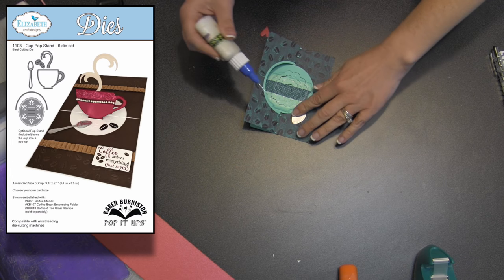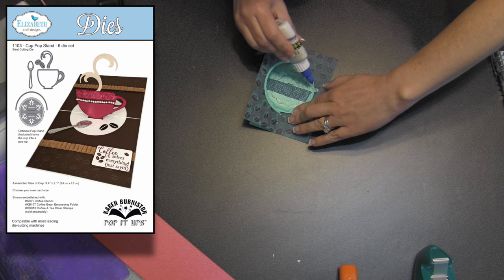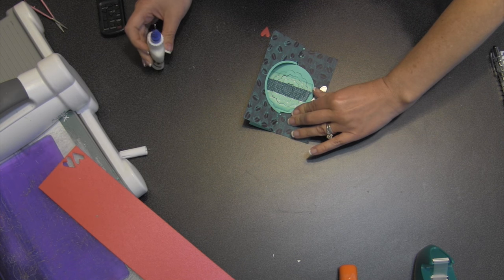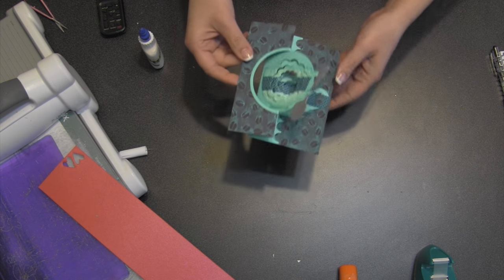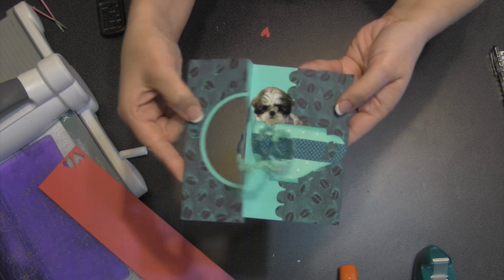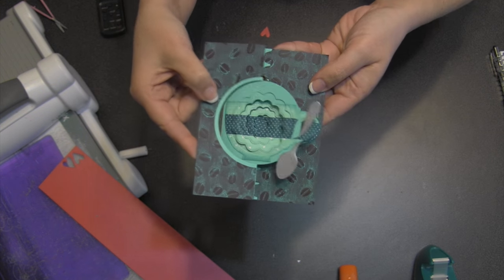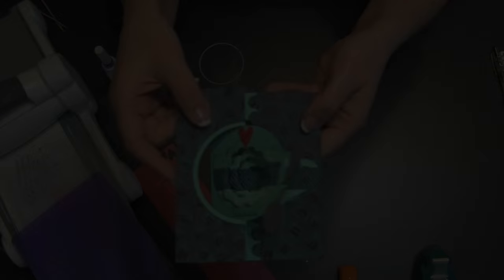I cut the spoon die that comes with the cup pop stand out of a silver paper, and then I just wove it through the handle and glued it into place so that it's attached to the front cup. So when the card is open, the spoon moves as well.